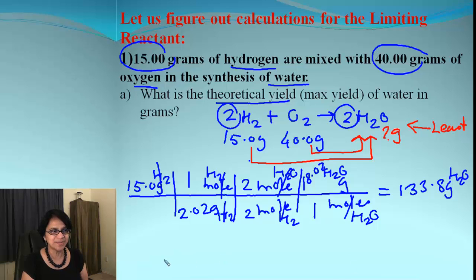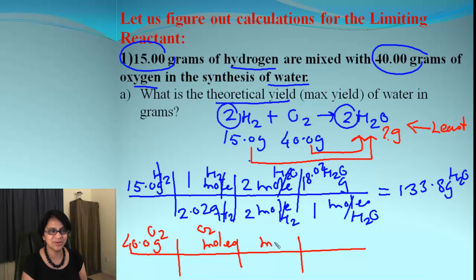Let's do the same thing with oxygen and let's figure out which one gives you the smallest answer. Your beginning point now is 40.0 grams of oxygen. Look, again you go from grams to moles. From moles of oxygen we go to moles of water, and then from moles of water you go to grams of water. We are canceling our units here and then we are going to plug the values.